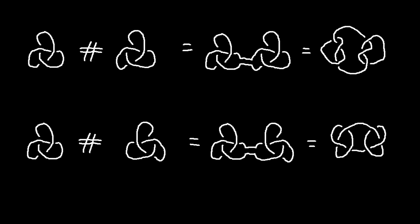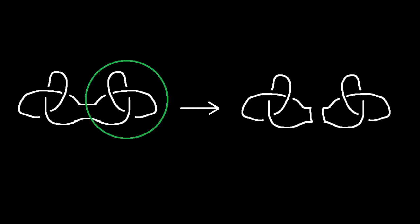If we want to reverse this operation, we can just consider the two pieces of string between the knots. If we place a sphere that intersects these, but doesn't intersect the rest of the knot, then we can rejoin these split ends along the sphere to give the two original knots. We call this factoring a knot into a connected sum of two other knots.